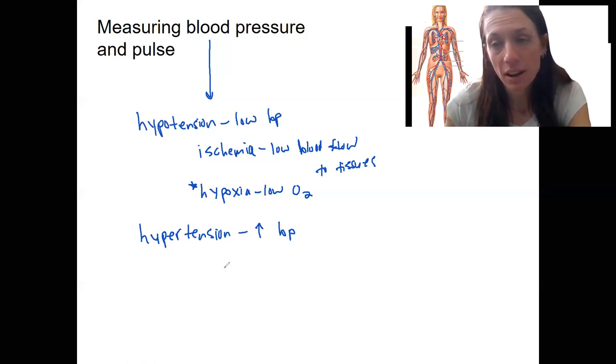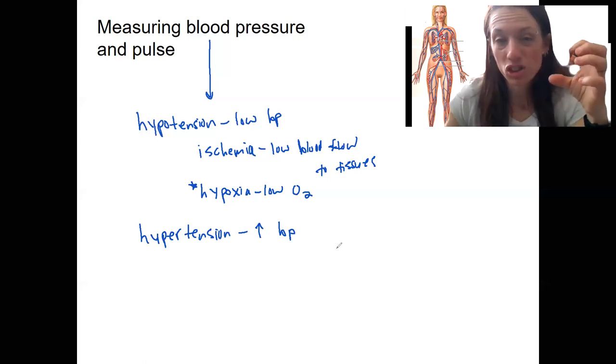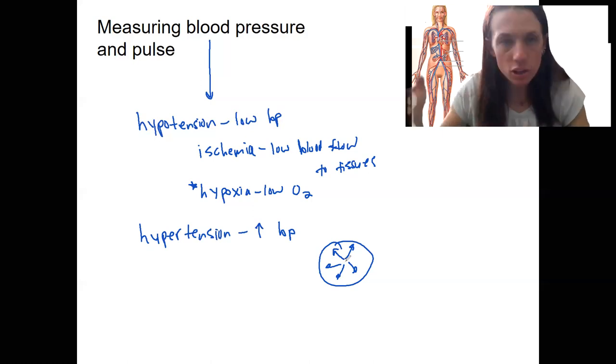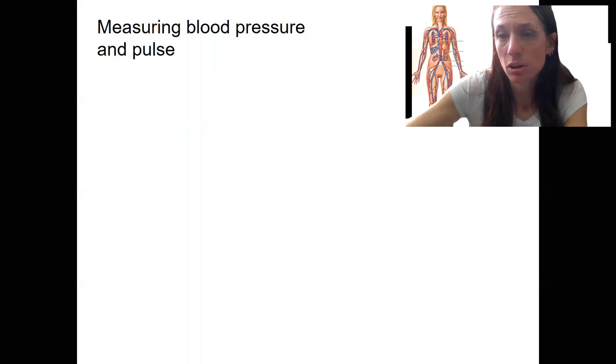It also can result in damage to the vessels themselves due to the pressure. Like here's a blood vessel. Pressure on that vessel can cause damage, especially if it's chronic. So that's why we measure these things. And let's look at how to measure them.